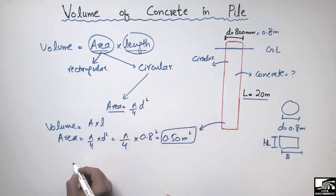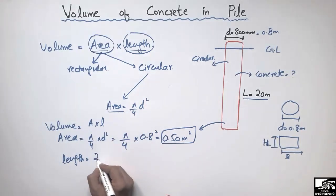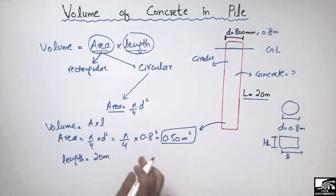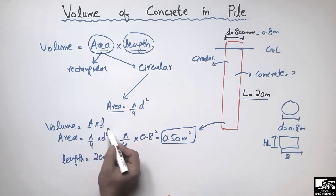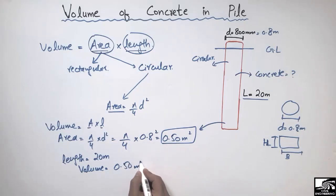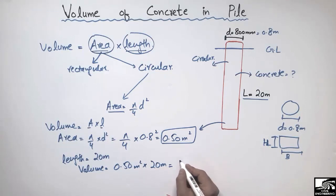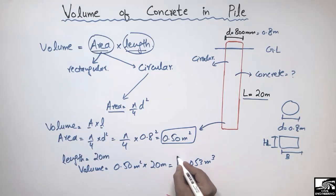Now to find the volume: the length of this pile is given as 20 meters. So just plug in the area and length. Volume = area × length = 0.50 square meters × 20 meters.